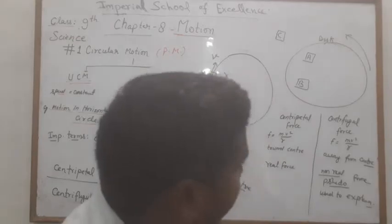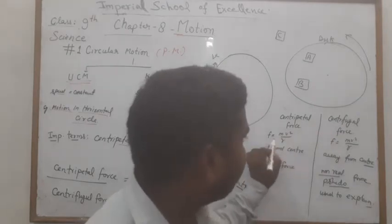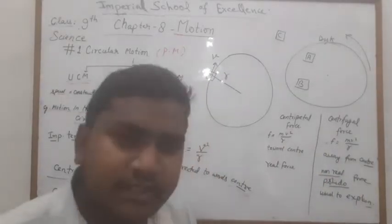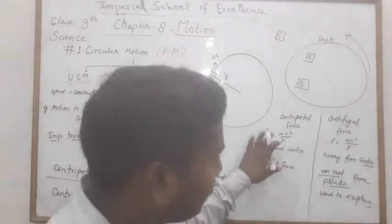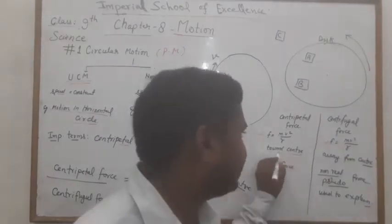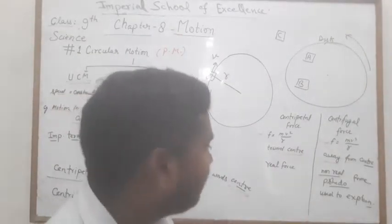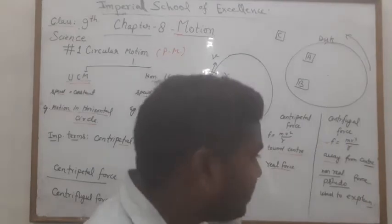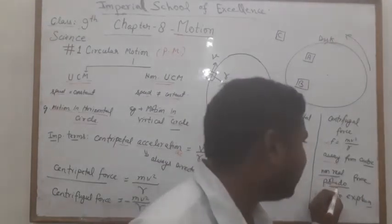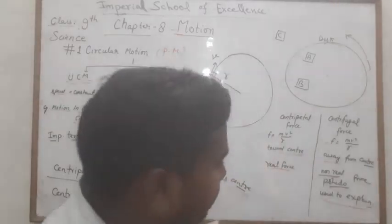Centripetal और centrifugal force में अंतर: formula दोनों का same है, magnitude भी same होता है। Centripetal force toward the center काम करता है, जबकि centrifugal force away from the center। Centripetal force एक real force है जो reality में exist करता है - इसके बिना circular motion possible नहीं। जबकि centrifugal force एक non-real या shadow force है, जो कुछ concepts को explain करने के लिए लाया गया है।